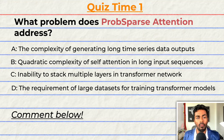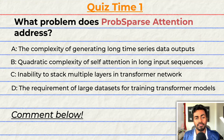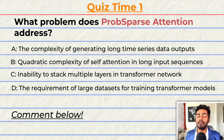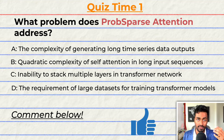Quiz time! Have you been paying attention? What problem does prob-sparse attention address? A: the complexity of generating long time series data outputs. B: the quadratic computation of self-attention in long input sequences. C: the inability to stack multiple layers in the transformer network. Or D: the requirement of large datasets for training transformer models. Comment your answer down below and let's have a discussion. And if you think I deserve it, please do consider giving this video a like because it will help me out a lot.